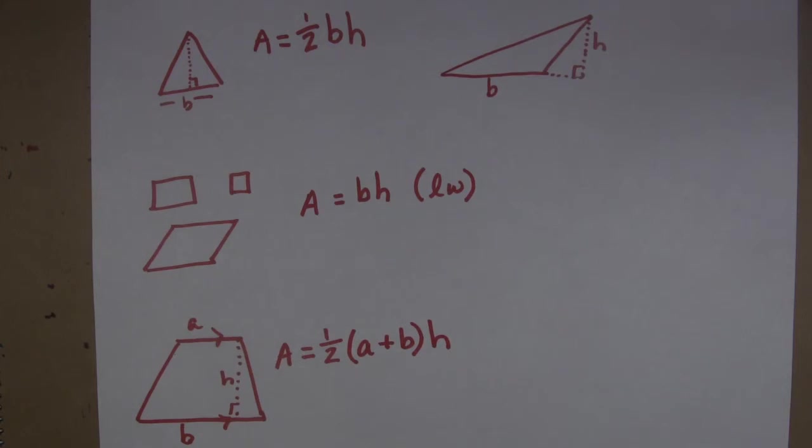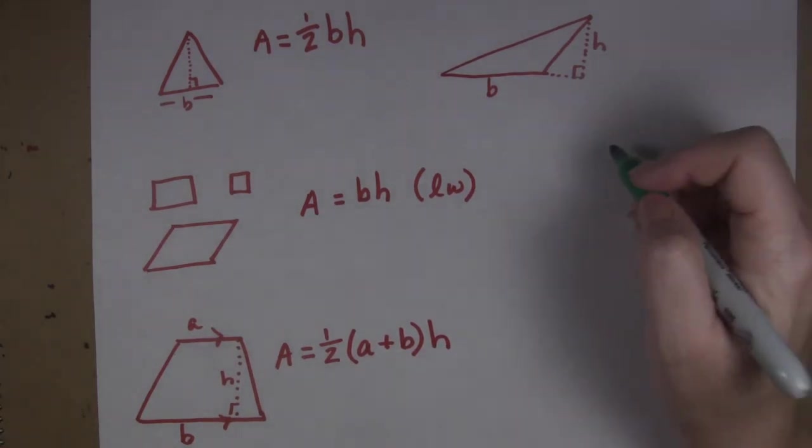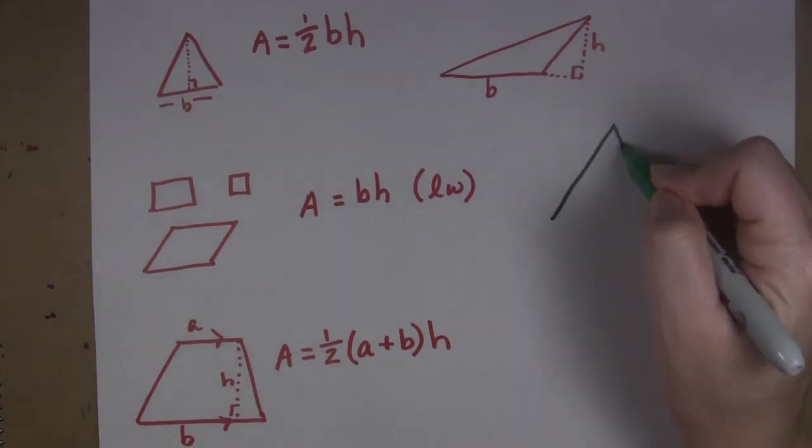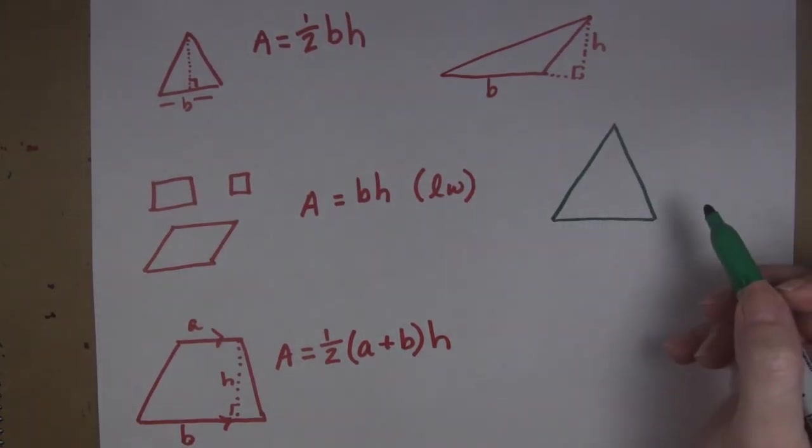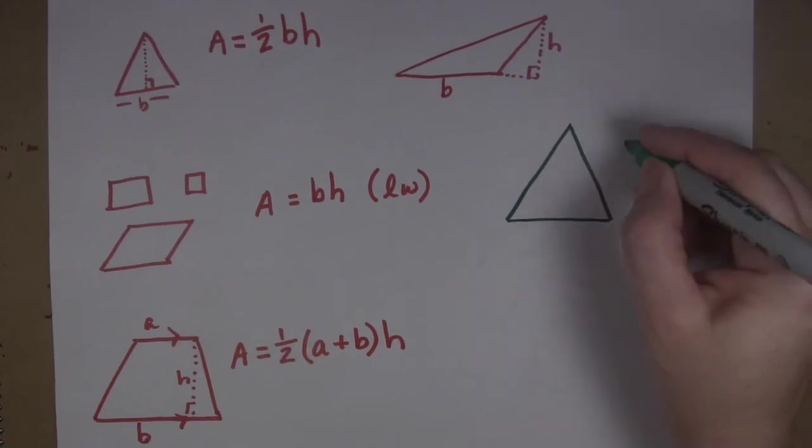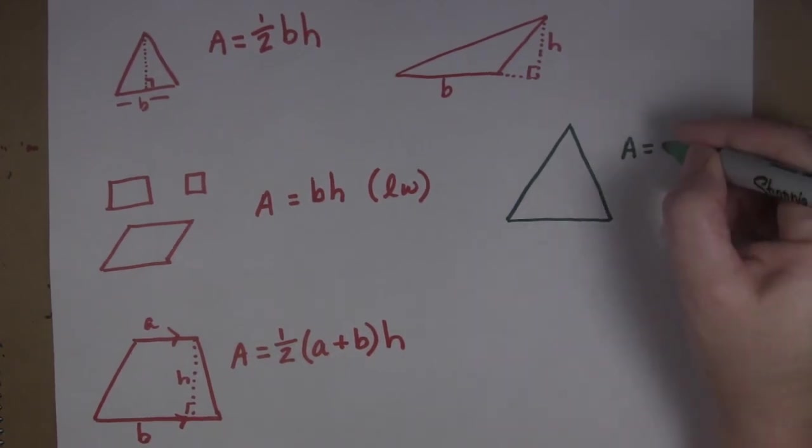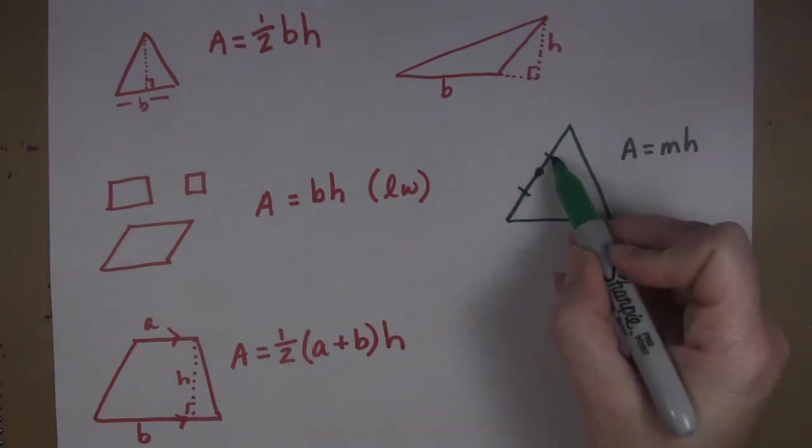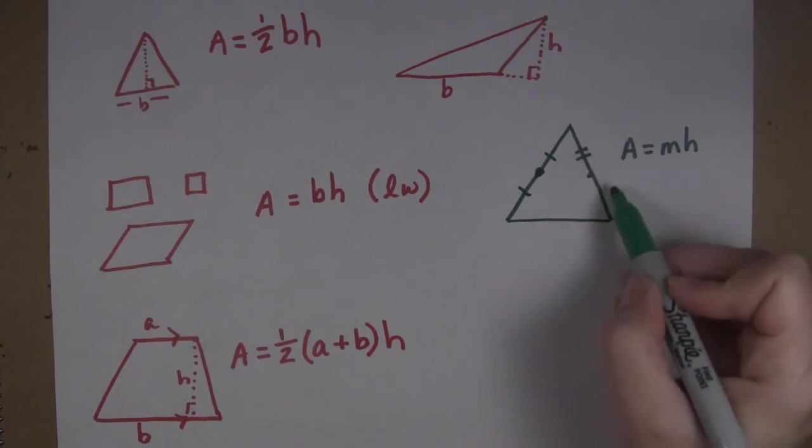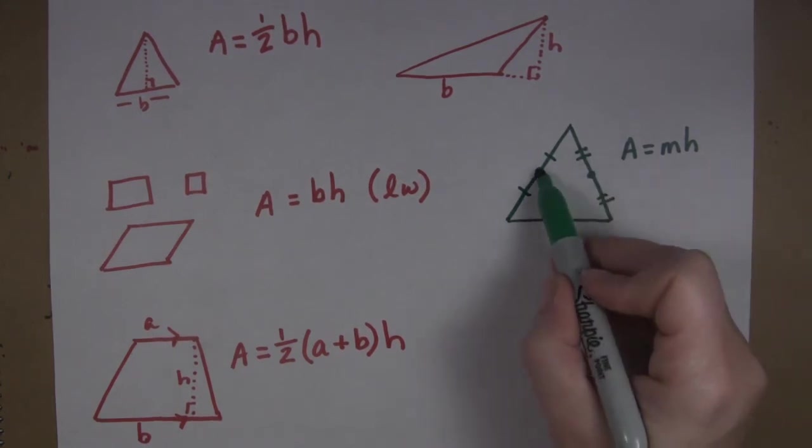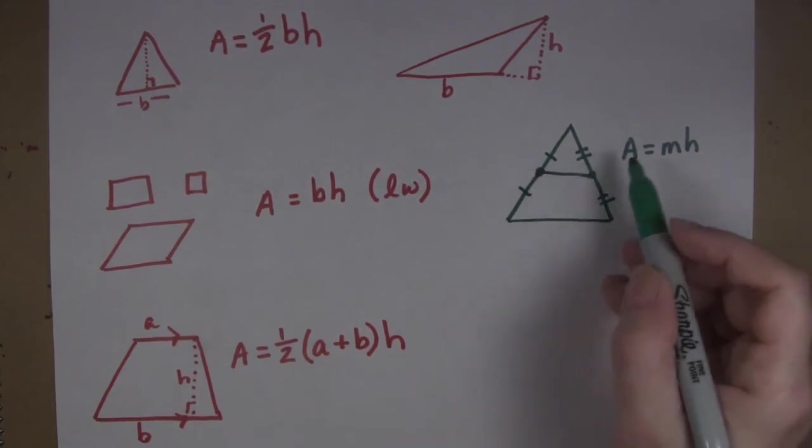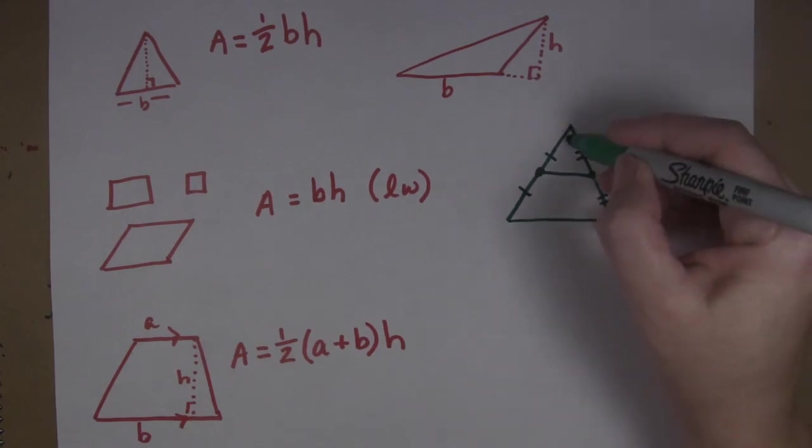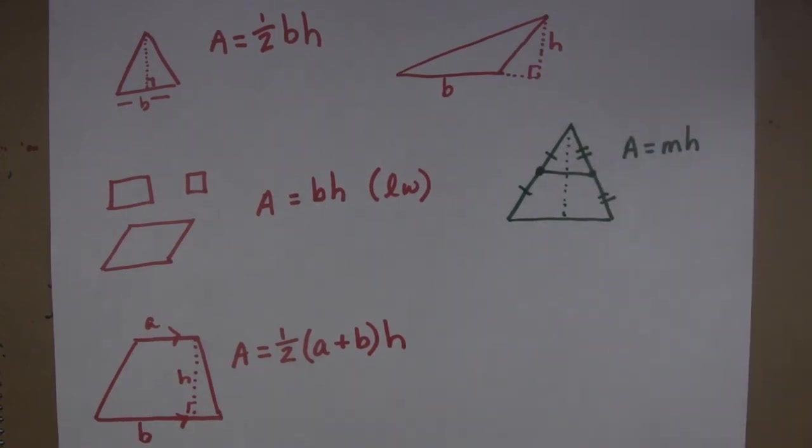There is another thing that they teach you in this chapter which I'm just going to add on here right now. And that is for all shapes, you can also say that the area equals the mid-segment times the height. So remember a mid-segment is halfway here and halfway here. This becomes the mid-segment. And if I take the mid-segment times the height I also get area.